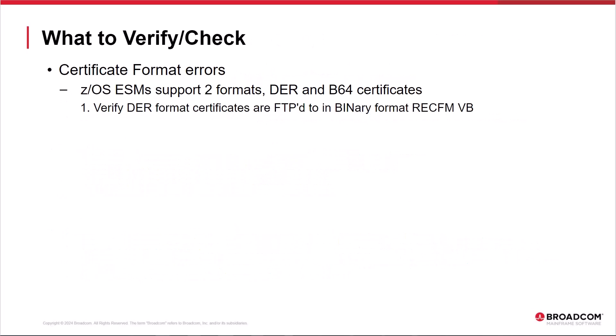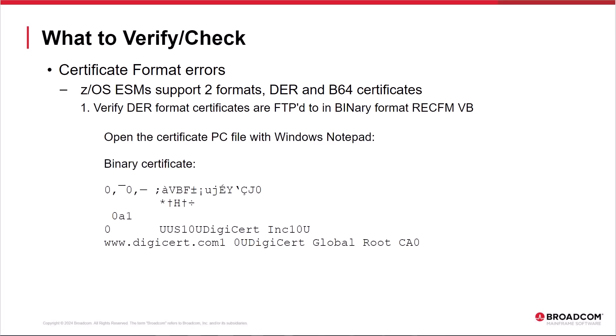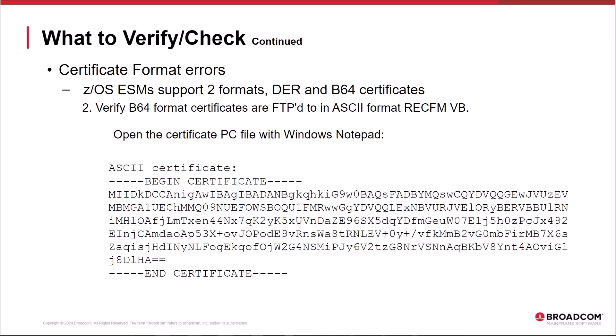This section will cover possible certificate formatting issues to be verified when encountering errors when reading or adding certificates to an ESM database. The z/OS ESMs support two certificate formats: DER binary and B64 ASCII. To determine the format of a certificate before FTPing a certificate from a Windows PC environment to z/OS, open the certificate file on the PC with Windows Notepad. A DER binary certificate should be FTP'd in binary format RECFMBB. A B64 ASCII certificate — identifiable by BEGIN CERTIFICATE and END CERTIFICATE text lines — should be FTP'd in ASCII format RECFMBB.